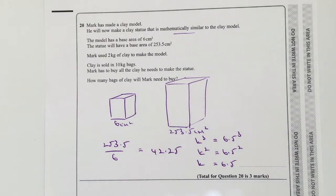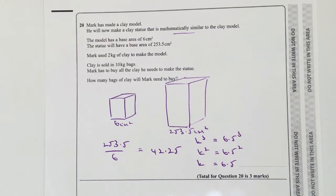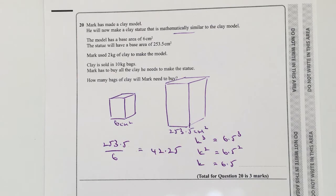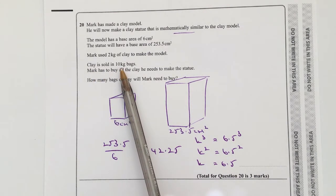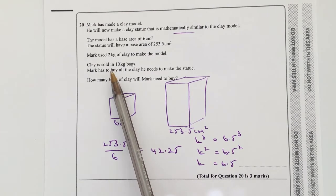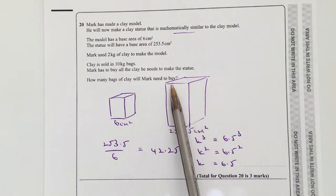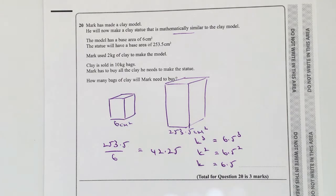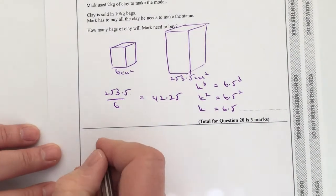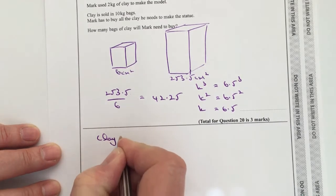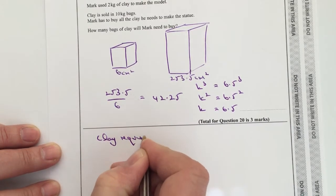Okay, now I can use all of that information then to be able to work out the answers to the question. So it says clay is sold in bags of 10 kilograms, and we've got to work out how much clay is going to be used for the actual statue itself. Okay, so the clay required to make the statue, I'll just write this in here, clay required for statue.